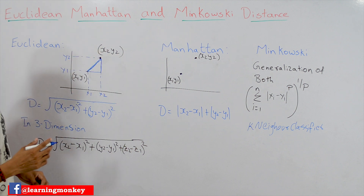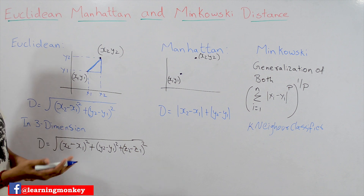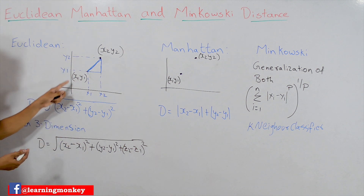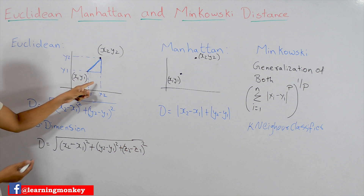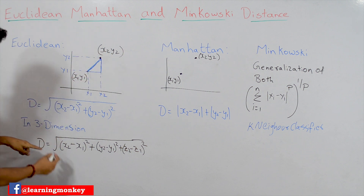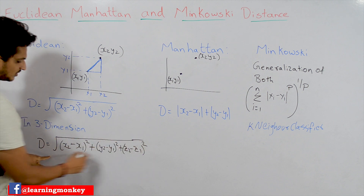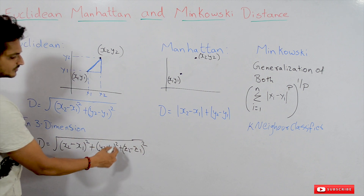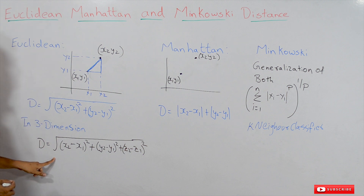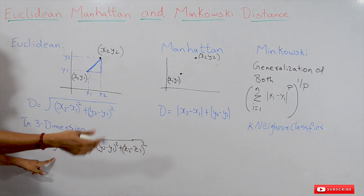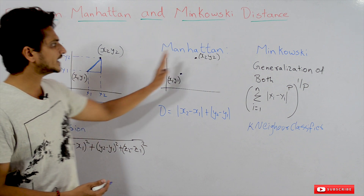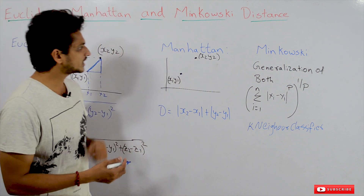This concept can be extended to any number of dimensions — even three dimensions or n dimensions. In a three-dimensional coordinate system, if the points are x1, y1, z1 and x2, y2, z2, then the distance d equals the square root of (x2 minus x1) squared plus (y2 minus y1) squared plus (z2 minus z1) squared. This formula extends to n dimensions as well.